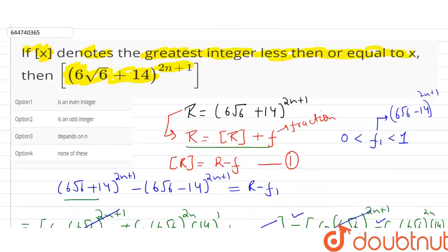Let's match the options. [R] is an even integer. Option number 1 is correct.